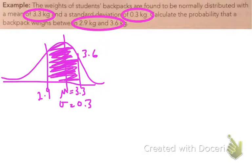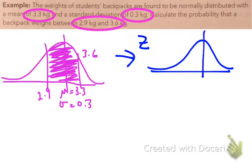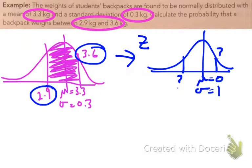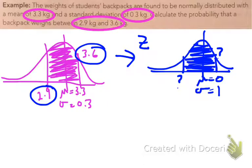We need to convert that to a z-distribution. Remember, z has a mean of 0 and a standard deviation of 1. So the value of 2.9 kg is going to be the equivalent of some negative z value, and the value of 3.6 kg will be equivalent to some point above the mean. We need to convert both 2.9 and 3.6 into z values, starting with 2.9.